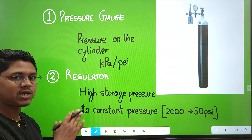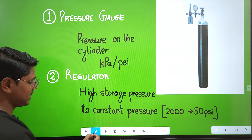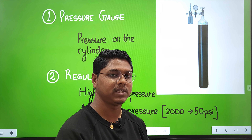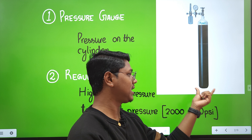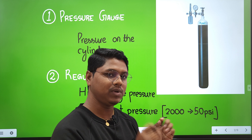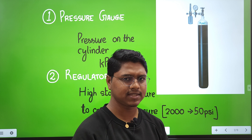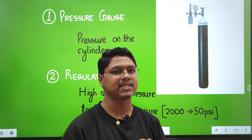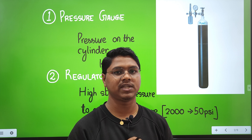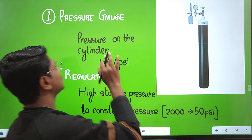Now, coming to the parts of the anesthesia machine — at the end I will show the full machine and all its parts, but first we should know the individual parts. The first part is the pressure gauge. A cylinder is provided which gives the fresh gas flow — or in technical terms, it provides the carrier gas, which takes the volatile anesthetics into the breathing circuit. This is the oxygen cylinder; it is black with a white neck.